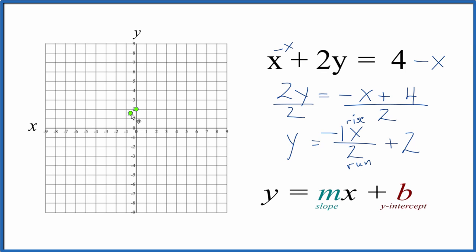So we go to this point here. We're going to rise negative 1, which actually means we're going to go down since it's negative. And then we're going to run to the right 1, 2.